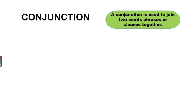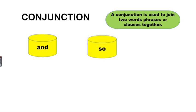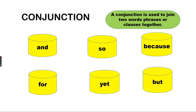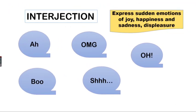A conjunction is used to join two words, phrases, or clauses together. For example: and, so, because, for, yet, but. An interjection expresses certain emotions such as joy, happiness, or sadness. For example: oh, oh my god, boo, shh.